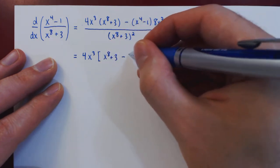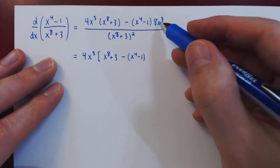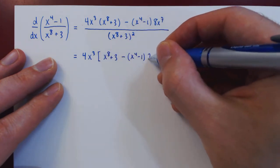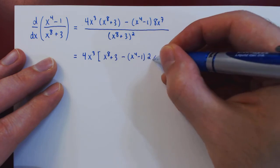Then minus, we haven't factored anything from the x to the 4 minus 1. We took away from 8 a 4, so we're left with a 2. And we took away from x to the 7 an x cubed, so we're left with x to the 4.